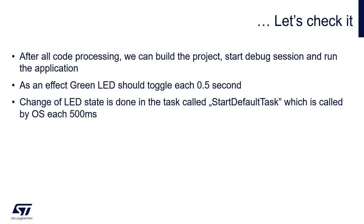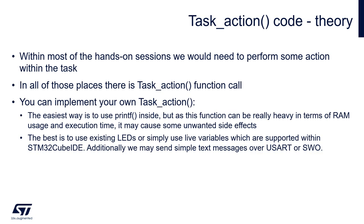Press Run within the debug session and check whether the green LED is toggling. Now we can prepare our template to be as universal as possible. Within the next parts we will need to perform some actions by particular tasks — there could be up to 4 of them within one application. I propose to implement a universal task_action function which accepts only one argument indicating which task is calling, and performs some action as a result. The easiest way is to use printf, but be careful as this function can be very heavy in terms of RAM, flash usage, and execution time.